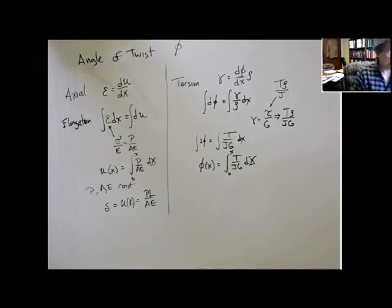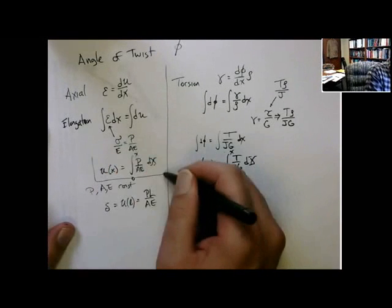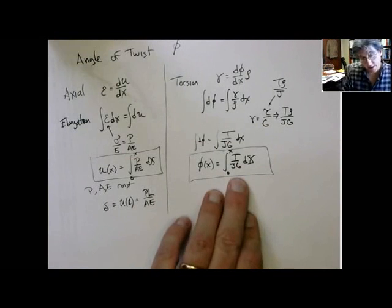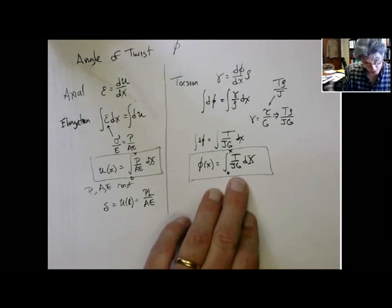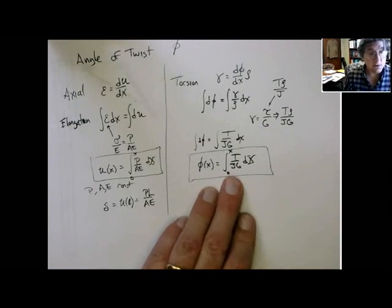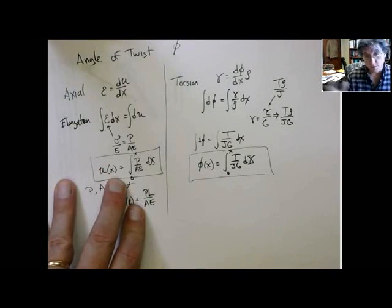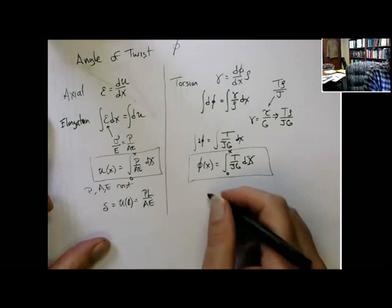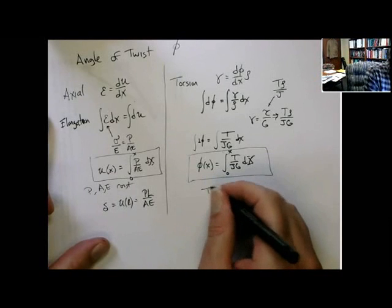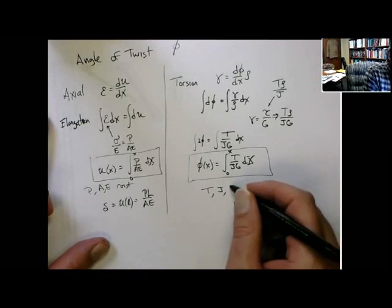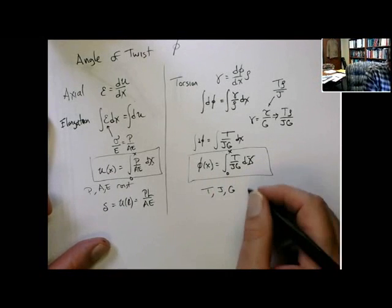So these two equations are analogous. But again, this is the general equation that tells you how much a disk at some distance x from one end rotates. You have to form this integral, just like we have to form the integral to figure out the displacement along the axial direction in the axial case. But very often we have, again, a situation where the internal reaction torque, the area factor, the geometric factor J, and then G, all constant.